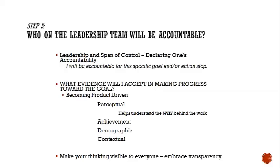After you start dancing with the data and the goals — and it is a bit overwhelming — the art of leadership is getting others to a place of saying what are we willing to be held accountable for. As goals emerge and action plans develop, we ask each other on the leadership team who's going to be accountable for what within the goal or action steps. That person becomes the head gardener — they take care of that goal and lead the process within the leadership team around the next 45 days.